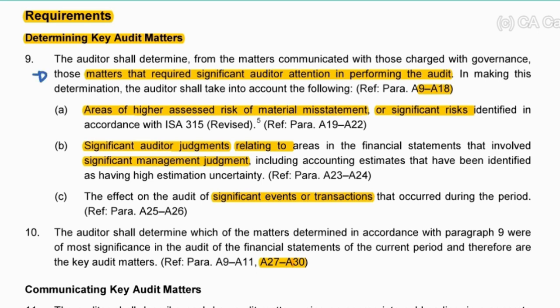The requirements: matters that we think are significant need to be included. I've highlighted A9 to A18 so we can see some additional guidance. But first, looking at what the standard says: where there is a significant risk or a higher risk of material misstatement - that's what we want to include - or where there was significant judgment, or where there were significant events or transactions. A9 to A18 give us some more, so let's have a look at those.